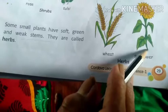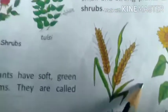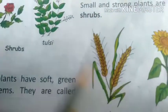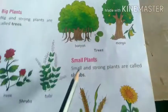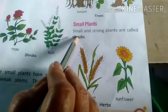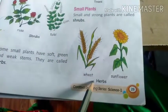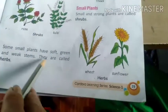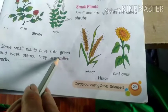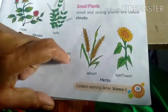So, in this page we have learnt about big trees, small plants, shrubs and herbs. Herbs means having very soft, green, weak stems.